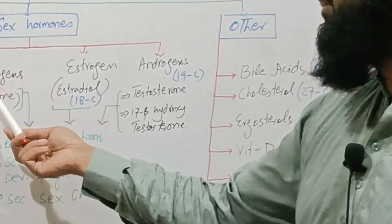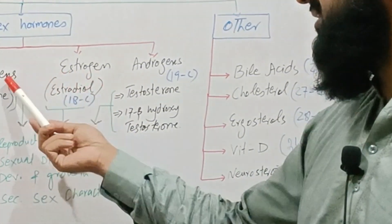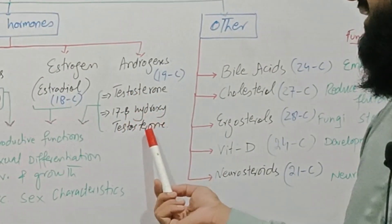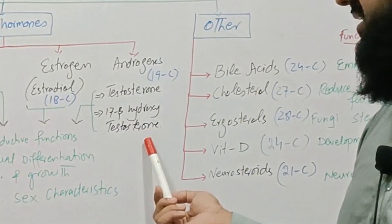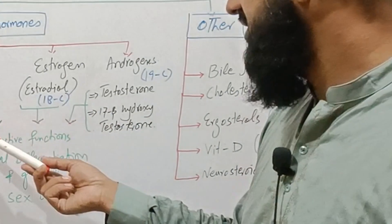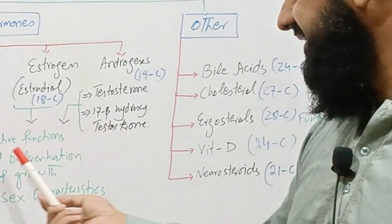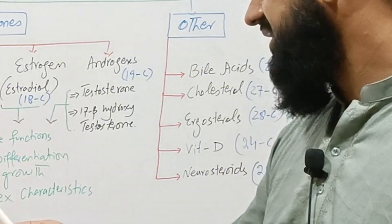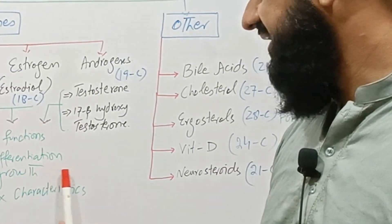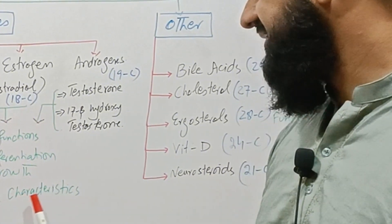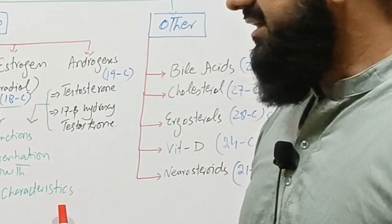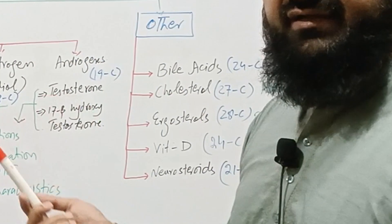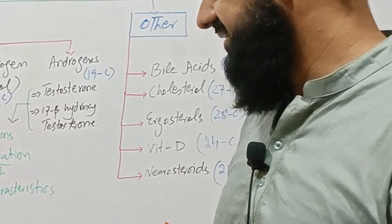Overall, progesterone and estrogens are produced in females while testosterone and these hormones are male sex hormones. Overall common functions in their respective sexes are: these are involved in reproductive function, sexual differentiation, development and growth of the sex organs, and secondary sex characteristics are the principal functions of all these hormones in their respective sexes.